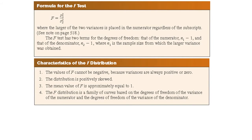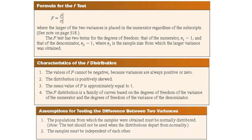When finding the F-test value, the larger of the variances is placed in the numerator of the formula. This is not necessarily the variance of the larger of the two sample sizes. The assumptions are: the populations from which the samples were obtained must be normally distributed, and the samples must be independent from each other. The larger variance should always be placed in the numerator of the formula, regardless of the subscript.